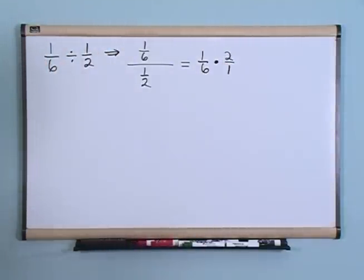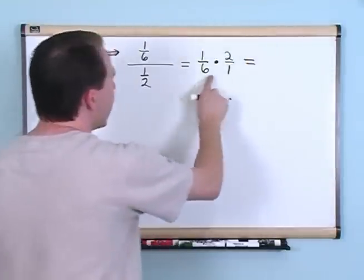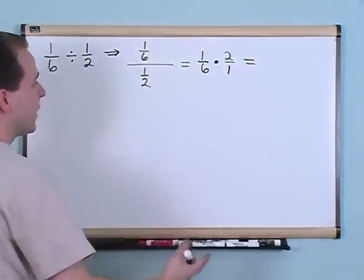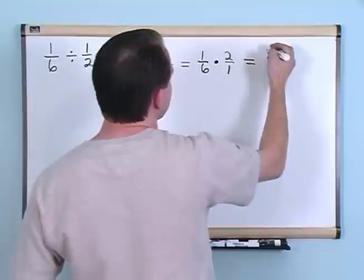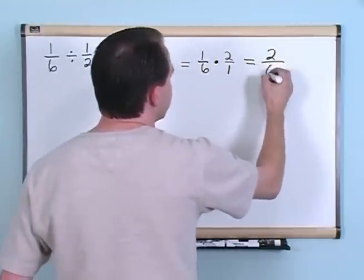I know that may not make a whole lot of sense, but that's really what you're doing. We'll go back and talk about this part in a minute. Let's go ahead and finish the problem. Now that it's a simple multiplication problem, you just multiply the top two numbers. 1 times 2 gives you 2. The bottom two numbers, 6 times 1 gives you 6.